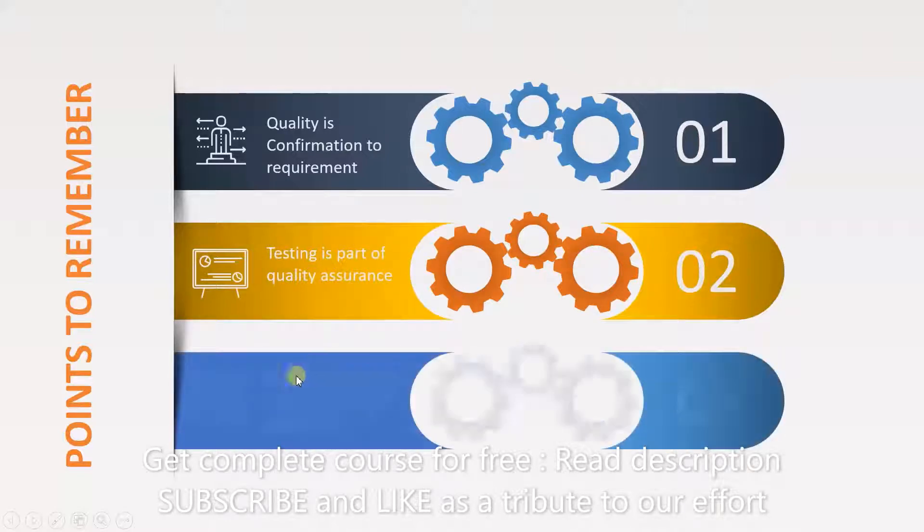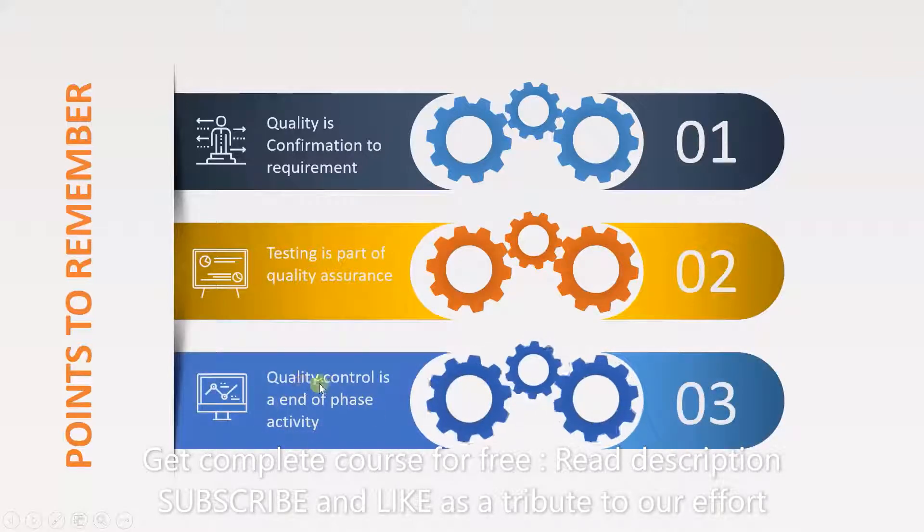And the final point is that quality control or testing is an end of phase activity. This means that you have to develop the product first. You have to do requirement analysis, design, coding, and once all of that is done and the product is in the implementation stage, then you can do quality control. You test to see if it meets requirements. And if it doesn't, then you know that the quality isn't good.